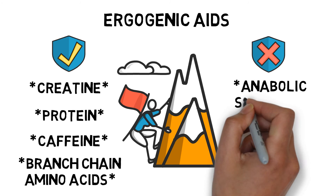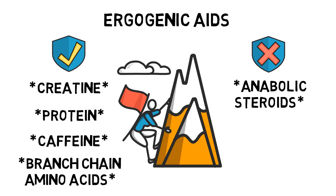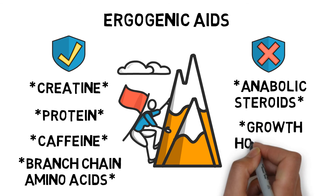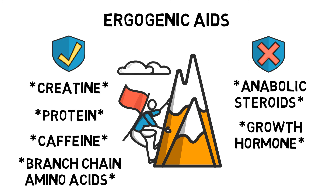Anabolic steroids mimic the effect of testosterone. They are primarily used to increase muscle mass, strength and reduce body fat. They are, however, banned from all professional athletic organizations and can cause some serious negative side effects. Growth hormone mimics the body's naturally occurring hormone HGH, and can help promote muscle mass, bone growth and recovery time after injuries. Use of growth hormone is still considered illegal in professional athletic organizations. EPO mimics the body's naturally occurring hormone EPO and is more commonly known as blood doping. EPO doping stimulates red blood cell production to increase oxygen transport and therefore increases aerobic capacity. This technique is also considered illegal in professional athletic organizations.